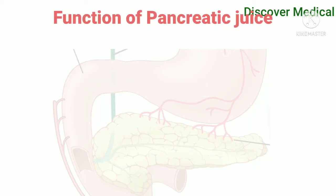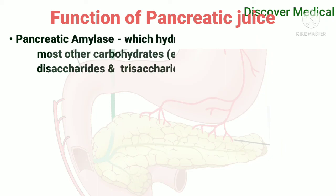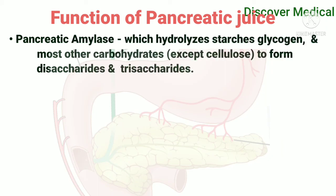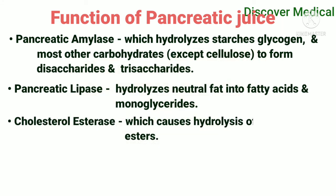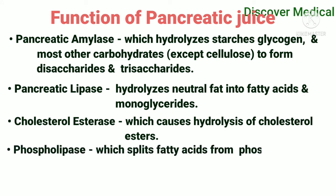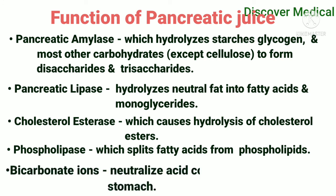Function of pancreatic juice: Pancreatic amylase hydrolyzes starches, glycogen, and most other carbohydrates except cellulose, forming disaccharides and trisaccharides. Pancreatic lipase hydrolyzes neutral fat into fatty acids and monoglycerides. Cholesterol esterase causes hydrolysis of cholesterol esters. Phospholipase splits fatty acids from phospholipids. Bicarbonate ions neutralize acid coming from the stomach.